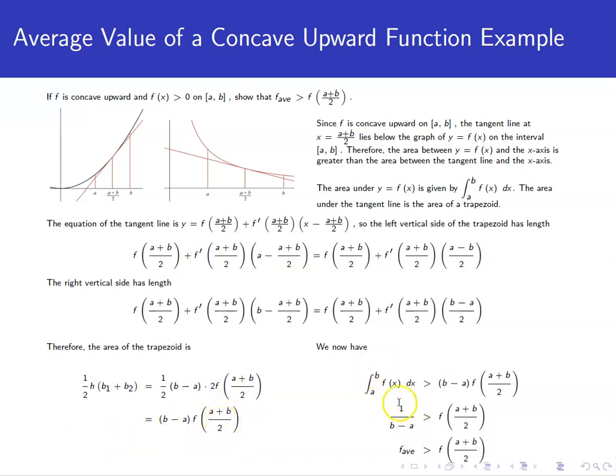We're almost done. Area under the curve for the function was the integral. Area of the trapezoid is this expression on the right-hand side. We already established that the area under the curve should be greater than the area of the trapezoid. Divide both sides by 1/(b-a), and I forgot to rewrite the integral. This should be 1/(b-a) times the integral from a to b of f(x)dx. And then that's exactly what the average value of the function is.